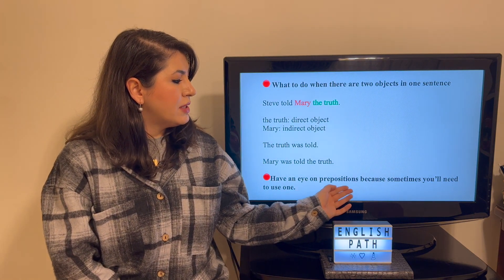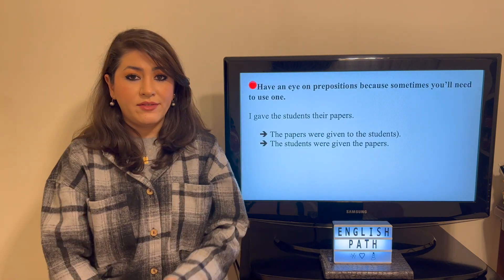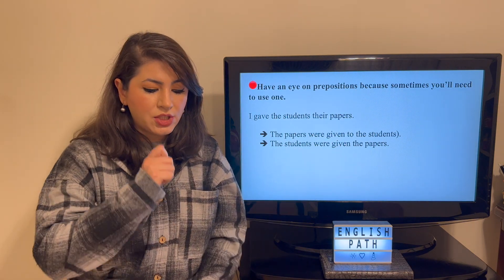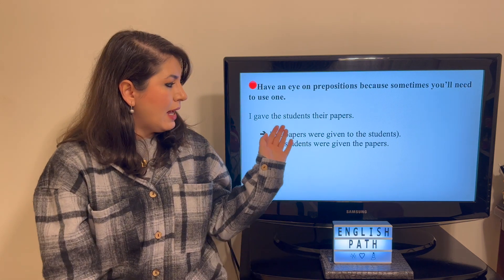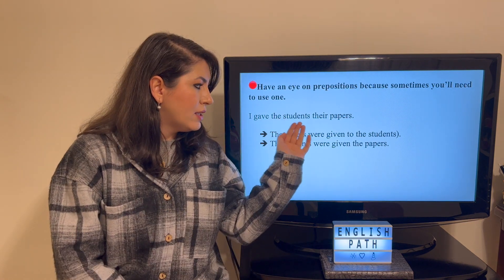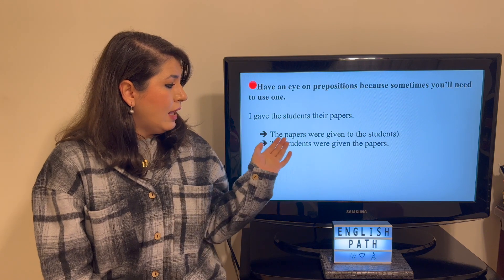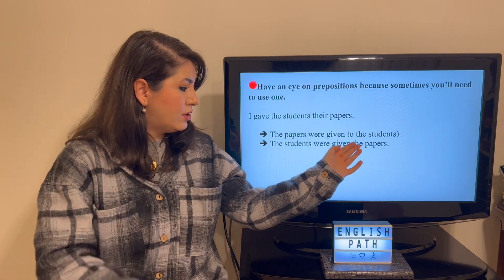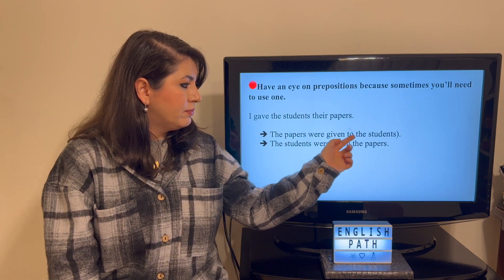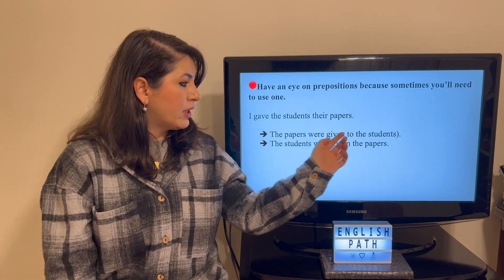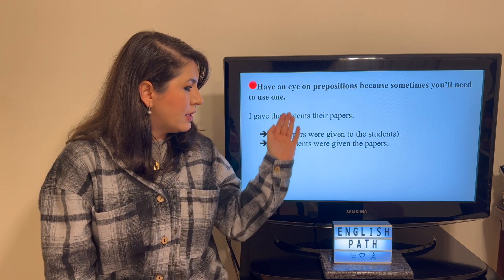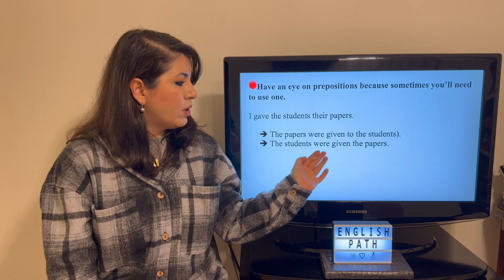You should have an eye on prepositions because sometimes you'll need them. For instance: 'I gave the students their papers.' The direct object is 'their papers' because the action of giving happened on the papers, and the students are the indirect object — the receiver of the papers. So: 'The papers were given to the students.' You need the preposition 'to' because 'the papers were given the students' doesn't make sense. And if you want to focus on the students: 'The students were given the papers.'